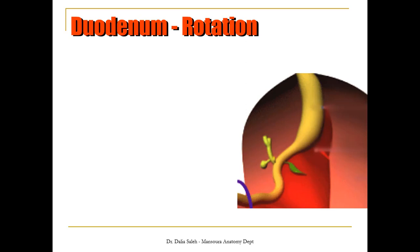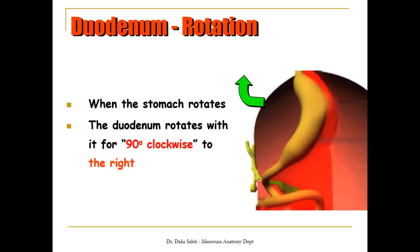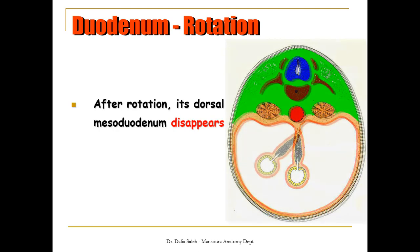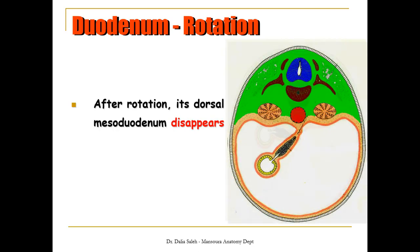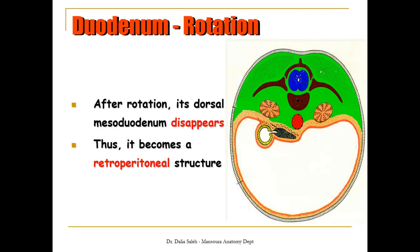Then the C-shaped duodenum rotates with the rotation of the stomach — it rotates in a clockwise direction to the right side. In this cross-section, you can see the duodenum is attached to the posterior abdominal wall by the meso-duodenum. But after its rotation of 90 degrees clockwise, its meso-duodenum is pressed against the posterior abdominal wall and soon disappears. Thus, the duodenum becomes a retroperitoneal structure.